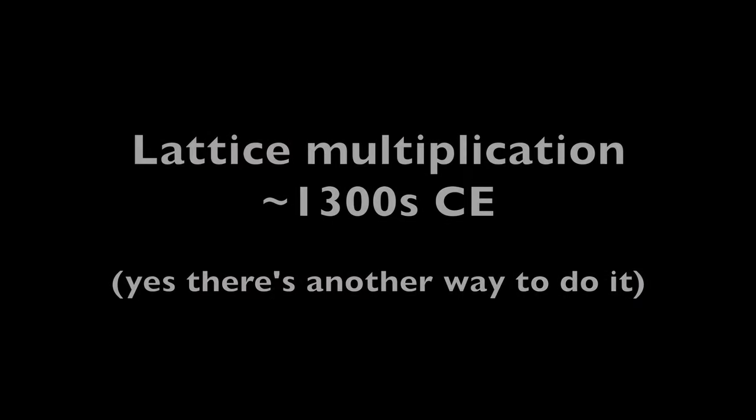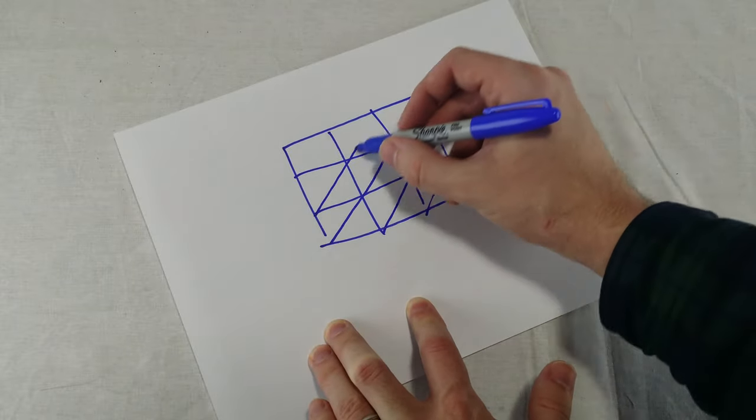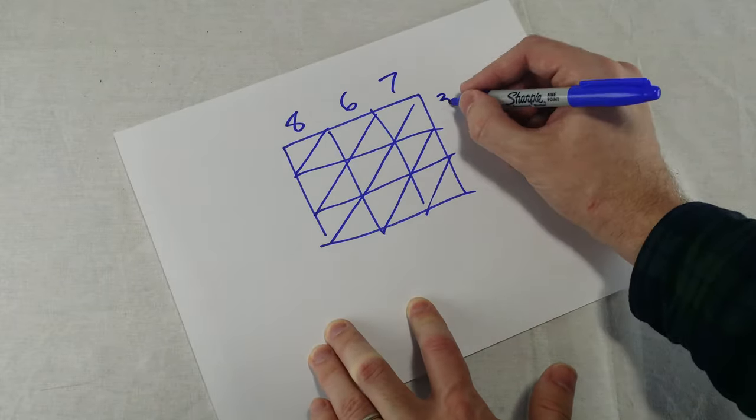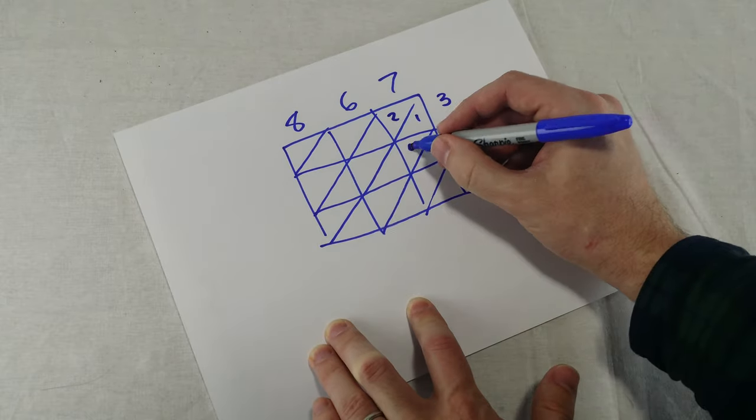Lattice multiplication. This is another pencil and paper multiplication method using Arabic numbers. It's a little weird to me, but it works.